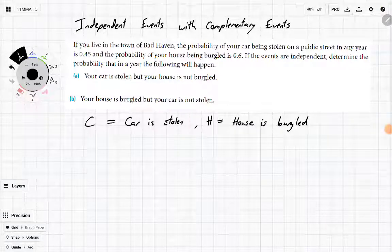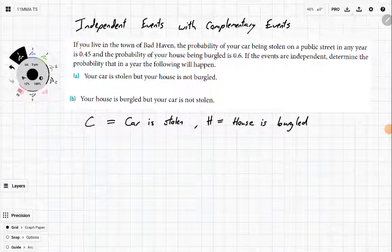All righty, so today we're going to be looking at independent events with complementary events. If you live in the town of Bad Haven, the probability of your car being stolen on a public street in any year is 0.45, and the probability of your house being burgled is 0.6. If the events are independent, determine the probability that in the year the following things will happen.